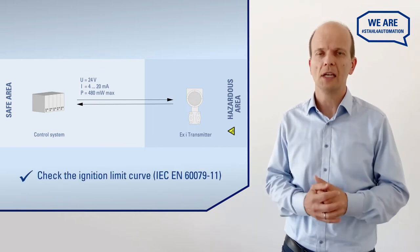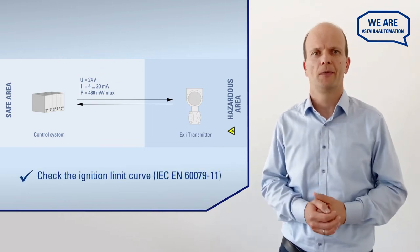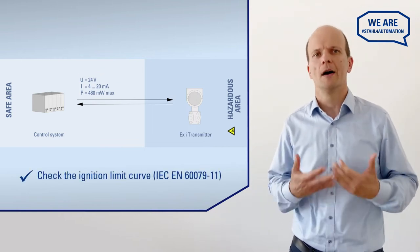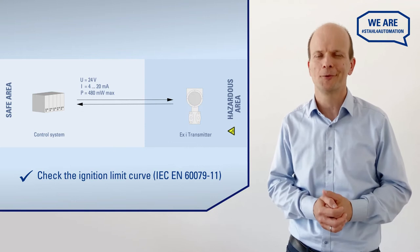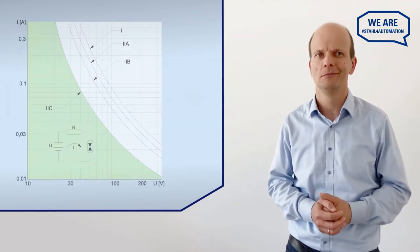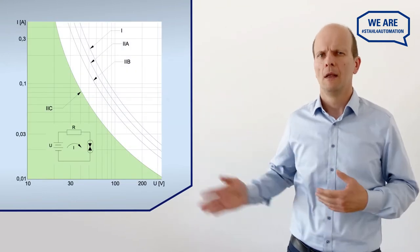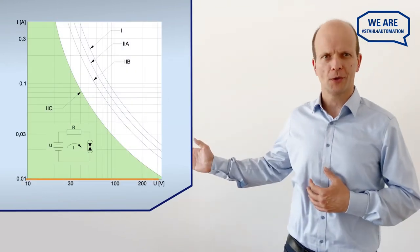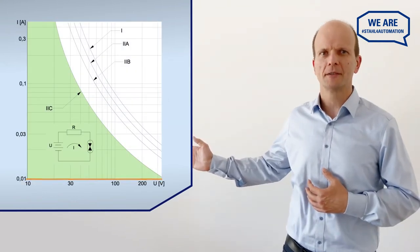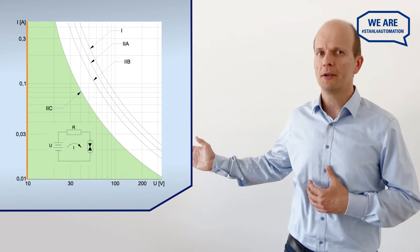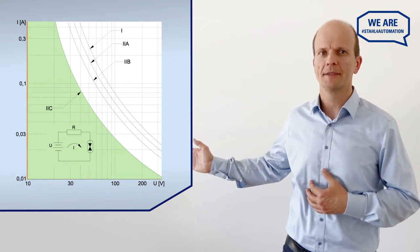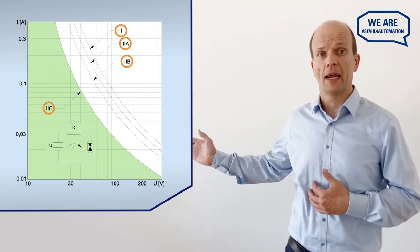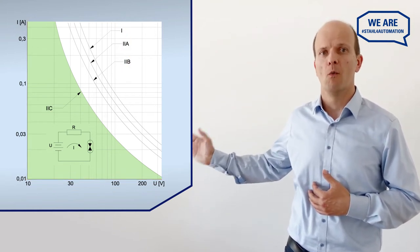Let's check the ignition limit curve to see why those values are intrinsically safe to begin with. This diagram shows the voltage on the x-axis, the current on the y-axis, and for each gas group one curve.